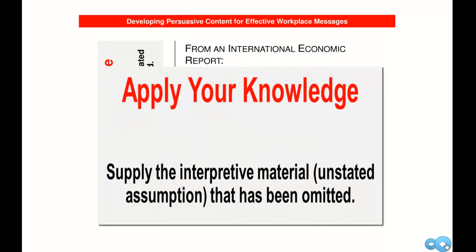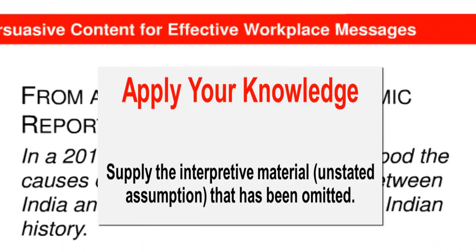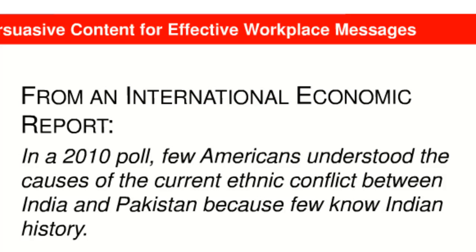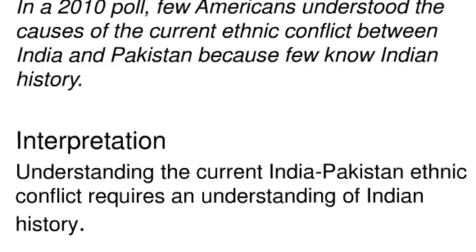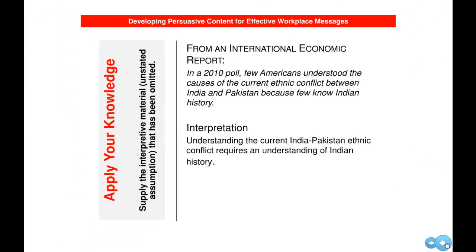Now it's time to check your understanding of developing persuasive prose by analyzing a passage you haven't seen before. The question asks you to supply the writer's missing interpretation or unstated assumption. Looking at an example from an international economic report: the claim is that Americans do not know Indian history, and the evidence is that they didn't understand the Indian-Pakistani conflict. The missing unstated assumption is that understanding history is a prerequisite for understanding the current conflict — this assumption connects the claim to the evidence.